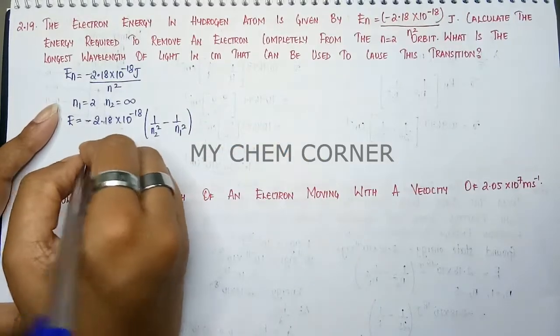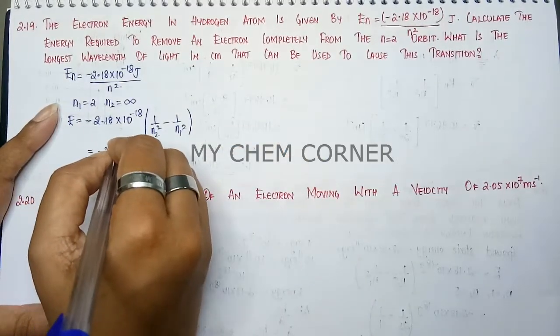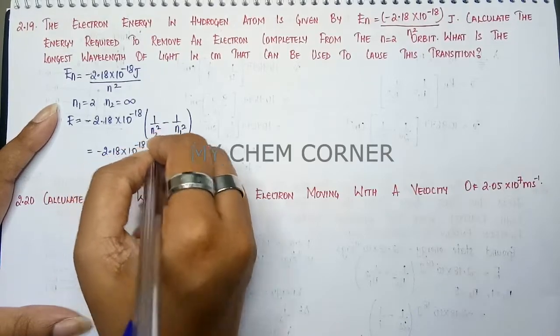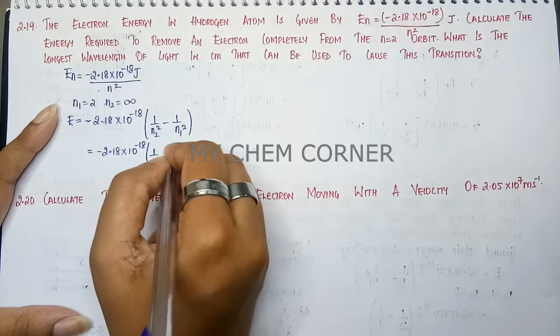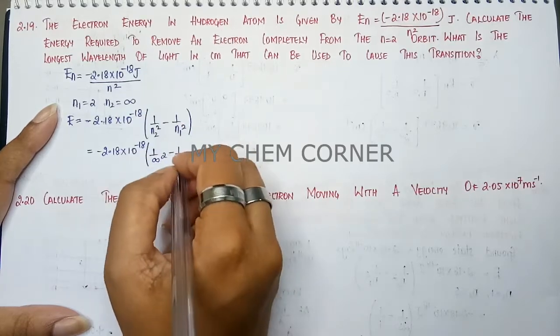All right. So here you are going to substitute it. 2.18 times 10 to the power minus 18 into 1 by infinity square by 1 by N1 square is going to be 2 square.